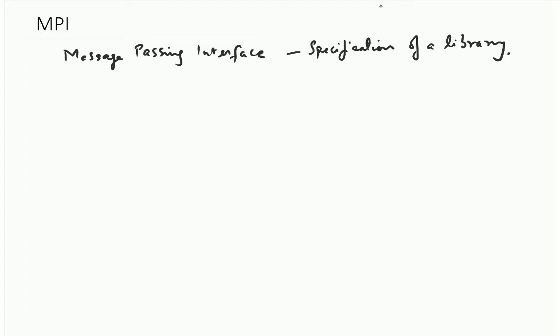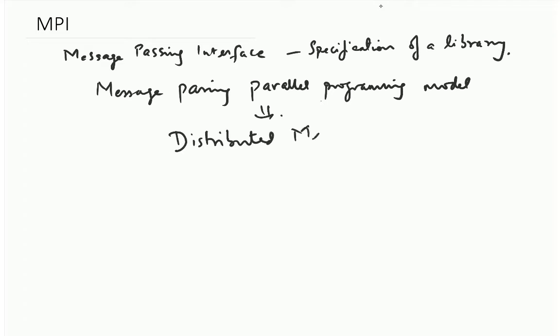What is it a specification for? It is a specification for a library which is used in message passing parallel programming model. As we discussed previously, we typically use these models in distributed memory systems. You can use them on a single node as well in a shared memory system.